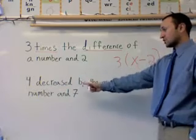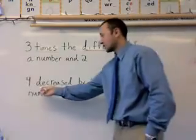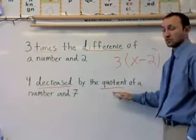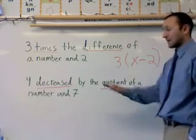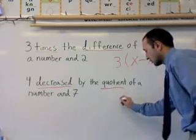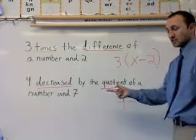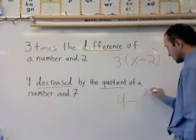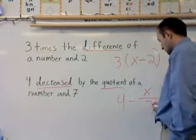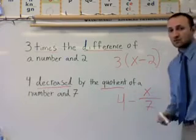If we look at the bottom one: four decreased by the quotient. There's two tips there - quotient and decrease. Decreased means it's going to be subtraction. Quotient means there's going to be some division. So four decreased by a quotient of a number and seven. Four is being decreased by something, so it'll be four minus the quotient of a number and seven. A number is always going to be x, and since I'm dividing, what am I dividing by? Seven. It ends up being four minus x divided by seven.